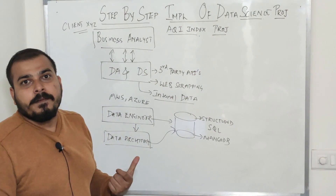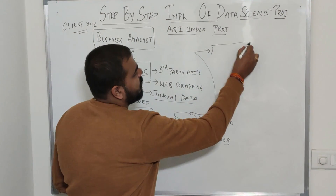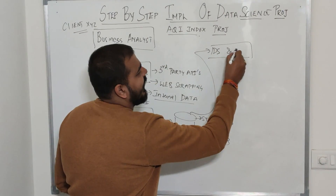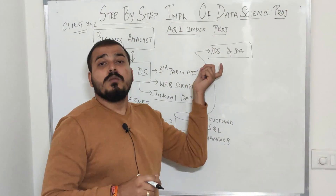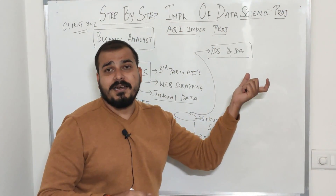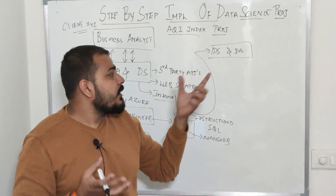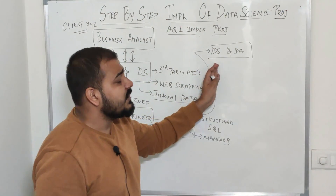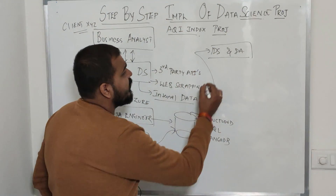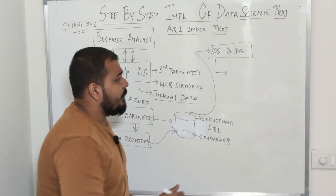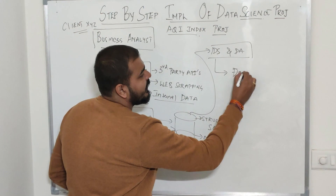Once the data is collected it goes to the data scientist and data analyst. The key difference is that a data analyst handles data pre-processing, analysis, visualization, and presenting to stakeholders, while a data scientist goes one step further toward model creation and deployment. The first step in the data science lifecycle is data pre-processing, also called feature engineering.